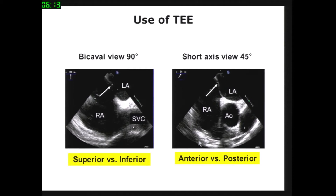This is a representative TEE image during septal puncture. In the bicaval view at 90 degrees, we can see the LA, RA, and SVC, and localize the fossa ovalis to judge whether the puncture is superior or inferior. In the short-axis view at 45 degrees, we can see the LA, RA, and aorta transversely, localizing the transseptal puncture as anterior or posterior.